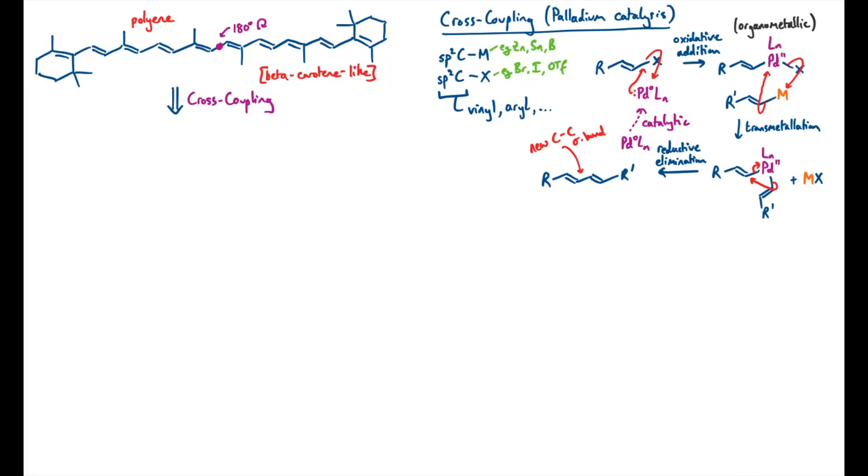Okay then, so back to our retrosynthesis. That tells us exactly what components we need. We need to make sure that one side has a metal attached to it, and the other side has, say, a halide attached to it. But otherwise, the structure of those molecules is pretty much the same. All we've done is tweak these end bits, and that allows us to make a major shortcut in our retrosynthesis.